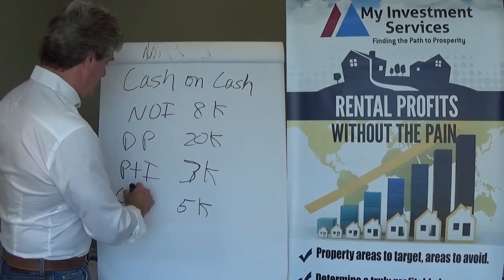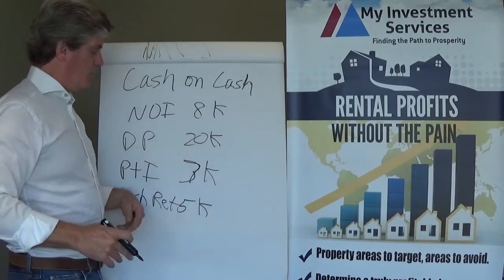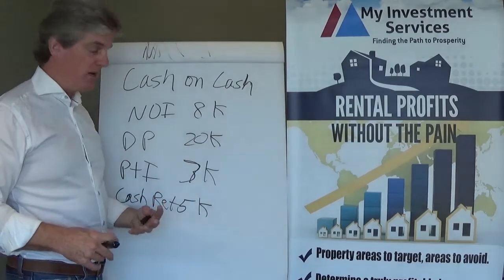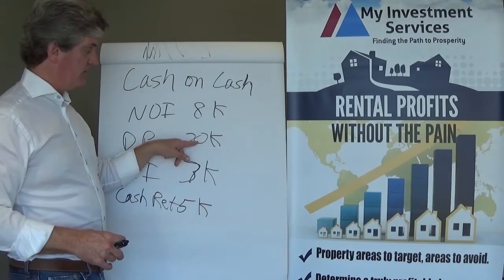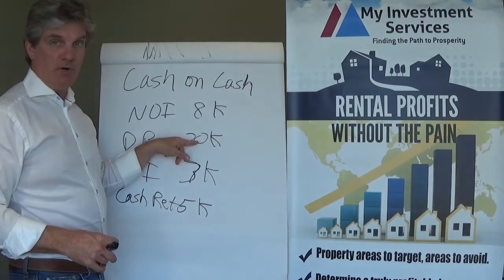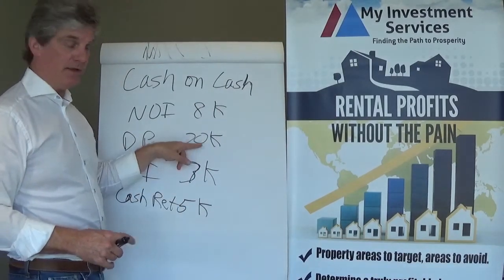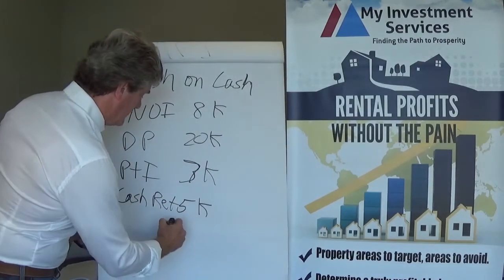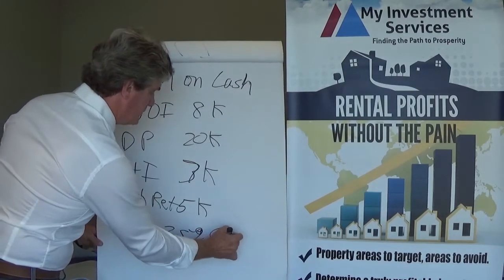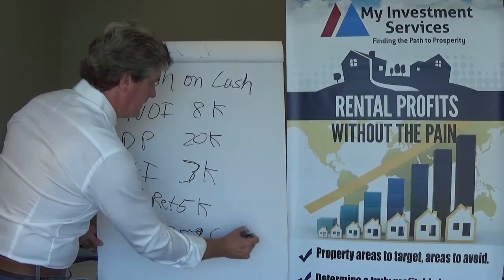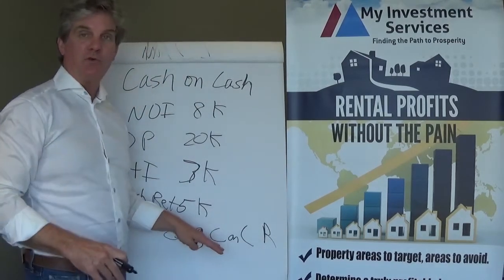That's your cash return — $5,000. The way you calculate cash on cash return is you take the $5,000 in your pocket and divide it by the money you put into the down payment, which is $20,000. $5,000 divided by $20,000 gives you a 25% cash on cash return.